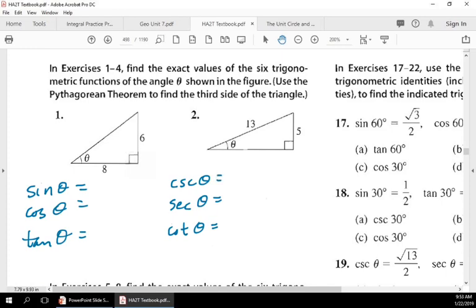For number two right here, we're missing a side. You need to have all three sides in order to find the values of trigonometric functions. Now, these triangles aren't necessarily in the unit circle, so you might get different values than what you guys might have seen in the unit circle.